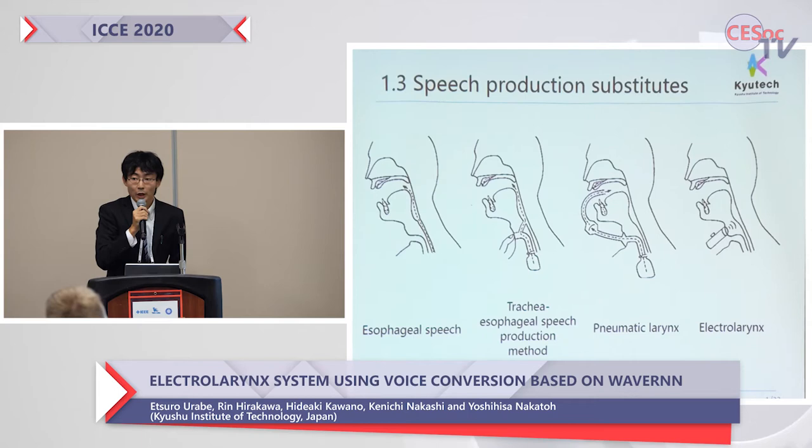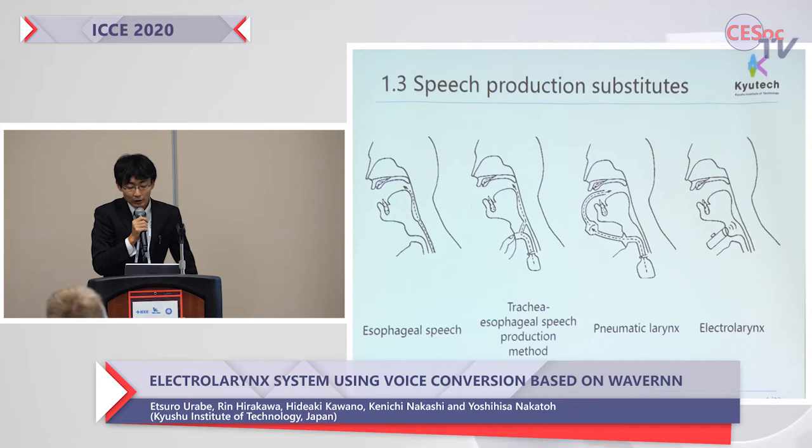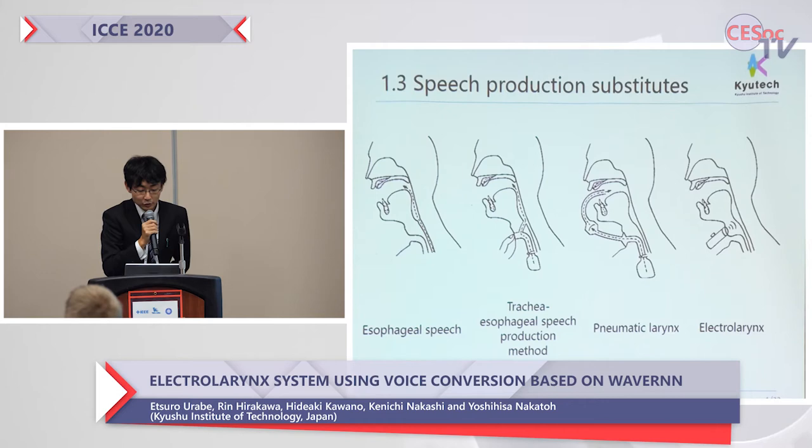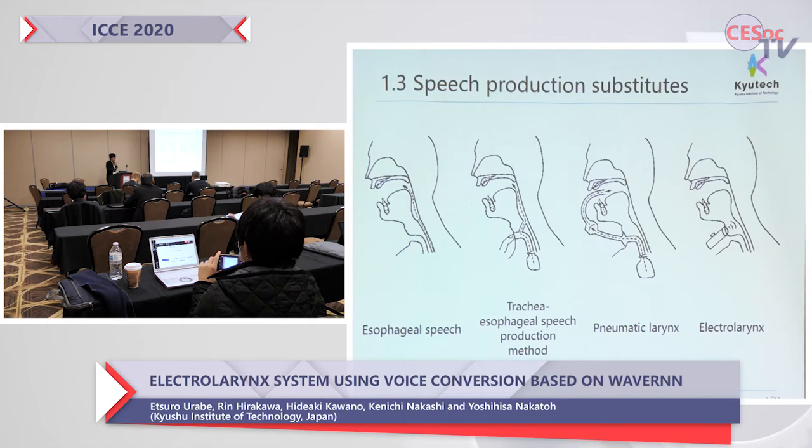The pneumatic larynx is a speech production method that uses a pipe-like instrument. It is unsanitary and looks bad, so it is not used much now. The electrolarynx is a speech production method using a vibrating device. Laryngectomees can speak by pressing it against the throat.